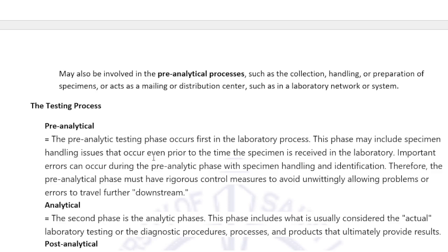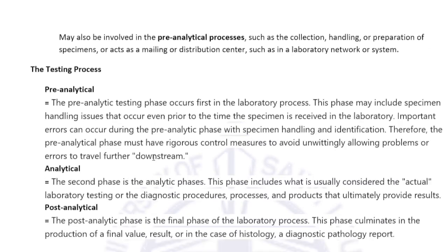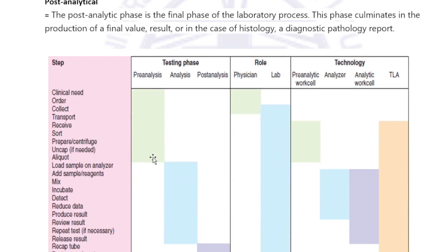The post-analytical phase culminates in the production of the final value result or, in the case of histology, a diagnostic pathology report. Under pre-analysis: clinical need, ordering, collection, and transport. Once you load the sample on the analyzer, that is considered the analytical phase — mixing, incubating, reducing data, reviewing results, repeating the test if necessary, and releasing the result.